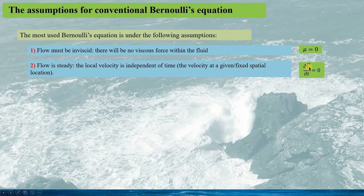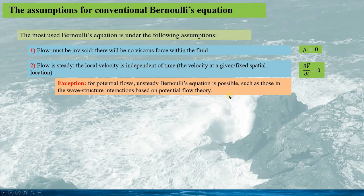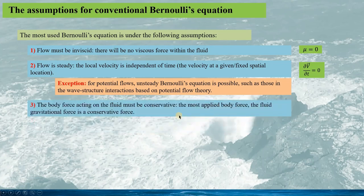This means the velocity vector is time-independent at the fixed spatial location. For this assumption we might have an exception: if the flow is potential, then the unsteady Bernoulli's equation is possible, such as those in wave-structure interaction based on the potential flow theory. The body force acting on the fluid must be conservative. The most applied body force is the gravitational force — it is a conservative force, and we have the expression for this specific force per unit mass.